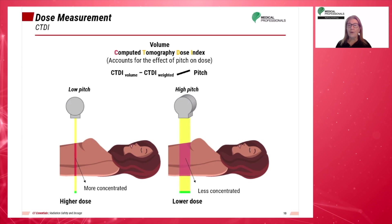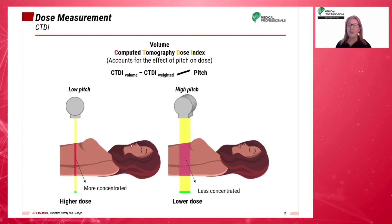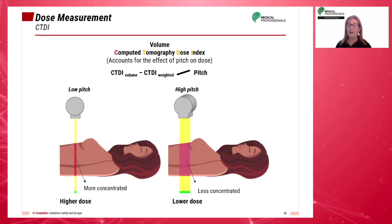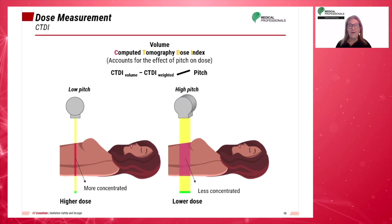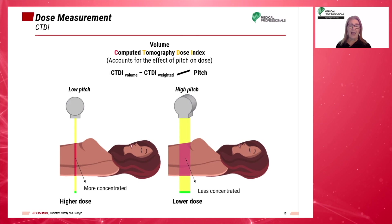There is also volume CTDI, which can be used to calculate dosage from a spiral scan per slice of tissue. Some feel this method may undervalue the dosage given to the patient. The volume CTDI is defined using an acrylic phantom and is not a dose to an actual patient.